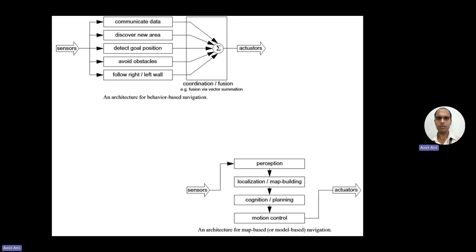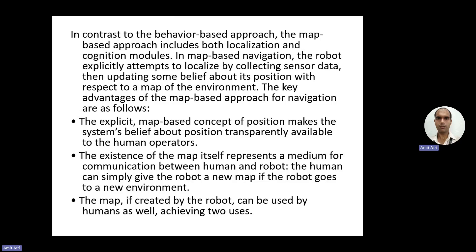In map-based navigation, sensors provide input data, then perception and map building occur, and through that map the robot moves. This involves planning, motion control, and then commands to the actuators. In contrast to the behavior-based approach, the map-based approach includes both localization and cognition modules. The robot explicitly attempts to localize by collecting sensor data and then updating its belief about its position with respect to a map of the environment.